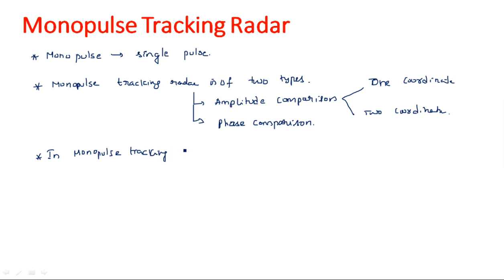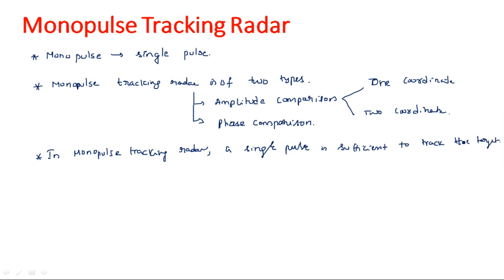In monopulse tracking radar, a single pulse is sufficient to track the target - first to get the target information and also to track it. We may have a doubt: how can a single pulse serve the entire purpose? In the previous cases like sequential switching and conical scan, how many pulses were used?